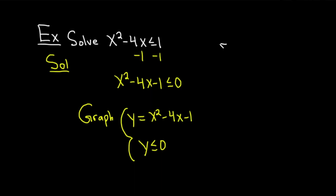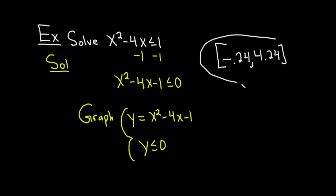So our answer is the bracket negative 0.24 comma 4.24 bracket. It's a rough answer but pretty good, and we did it all with the calculator. Hopefully this video has helped you learn some stuff about calculators. If you enjoyed this video, make sure to check out more videos on Chegg. Until next time, good luck.